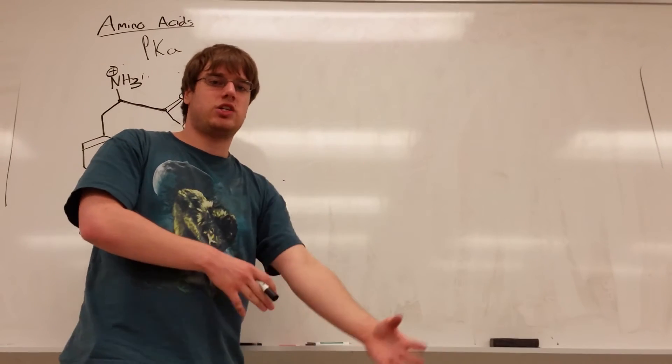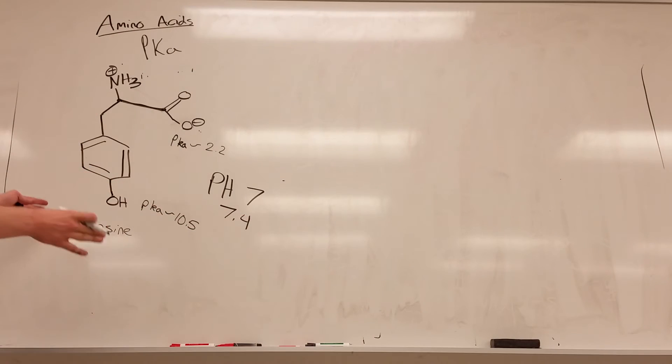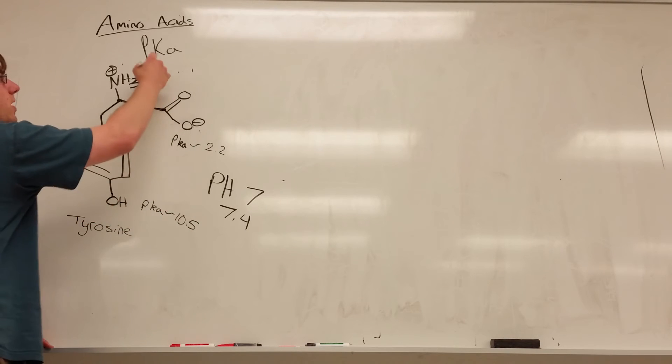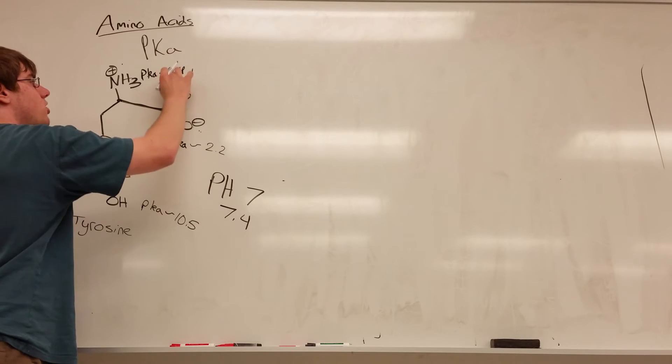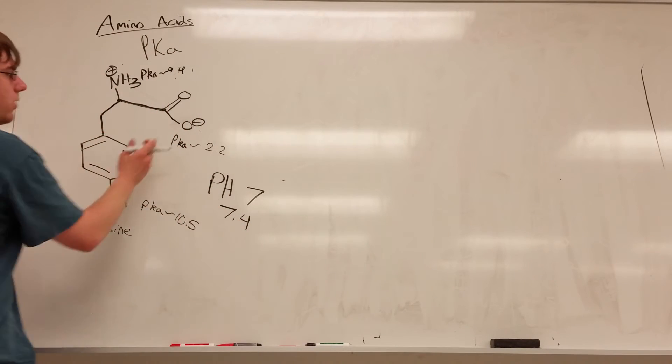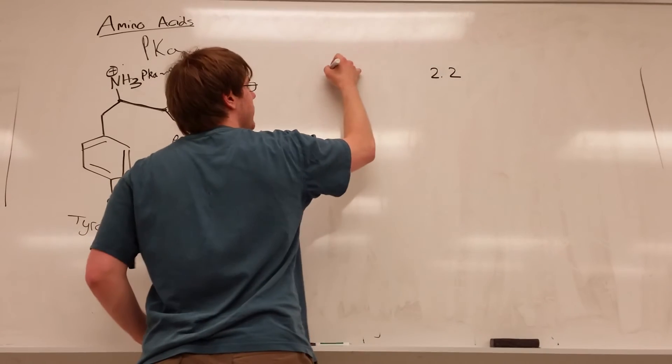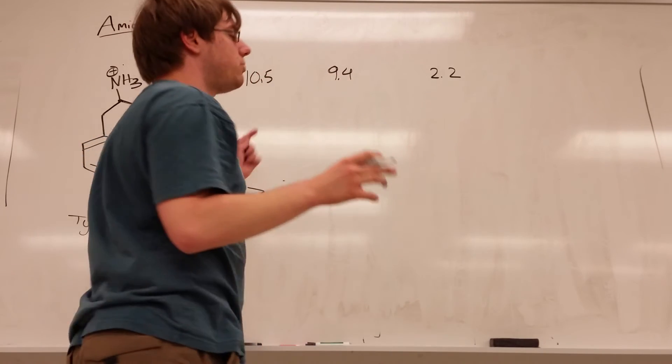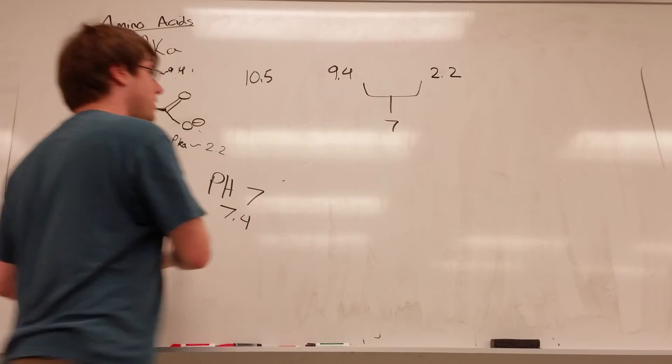What you want to do is you want to create kind of a bracket for each individual pH that you could have that would change the protonation state. Meaning, we already drew out the structure for pH of 7. That's this one over here. And pH of 7 exists between the pKa of the carboxylic acid group and the amine group, which we said was 9.4. What you want to have is a drawing for every amino acid and its protonation state that falls out in between each of these ranges, meaning I have a pKa of 2.2, I have a pKa of 9.4, and I have a pKa of 10.5. I want to have a protonation state drawing of something that's in between these two, which we said was 7. So we already have that drawing.